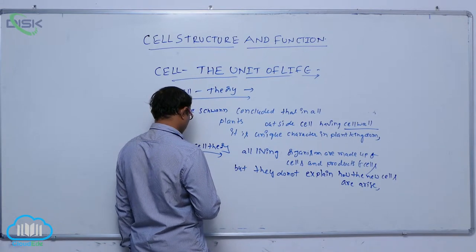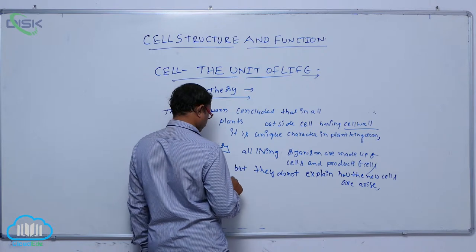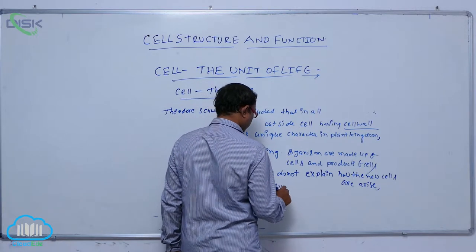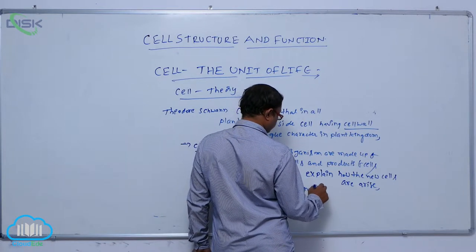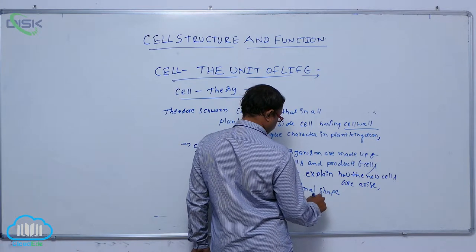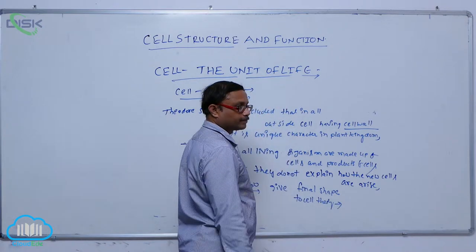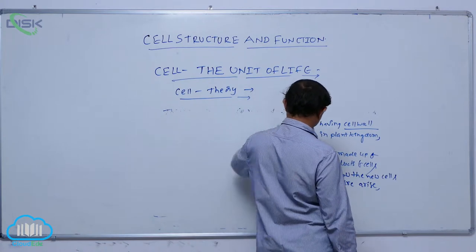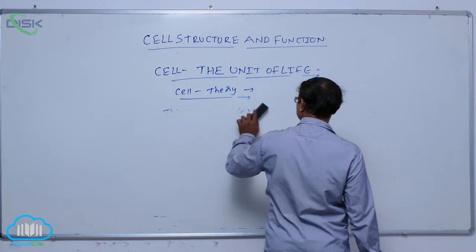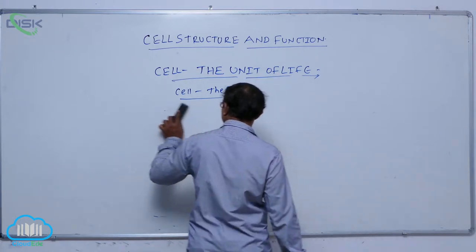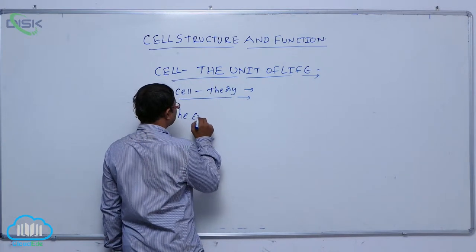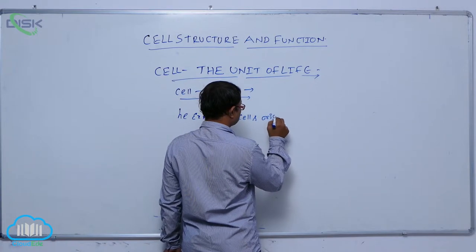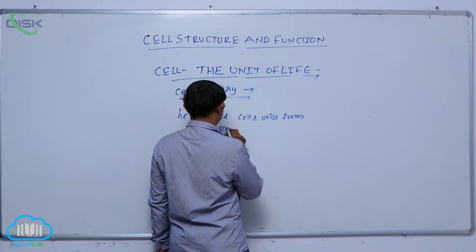After that, scientist Rudolf Virchow gave the final shape to cell theory. He explained that cells are formed from pre-existing cells by cell division.